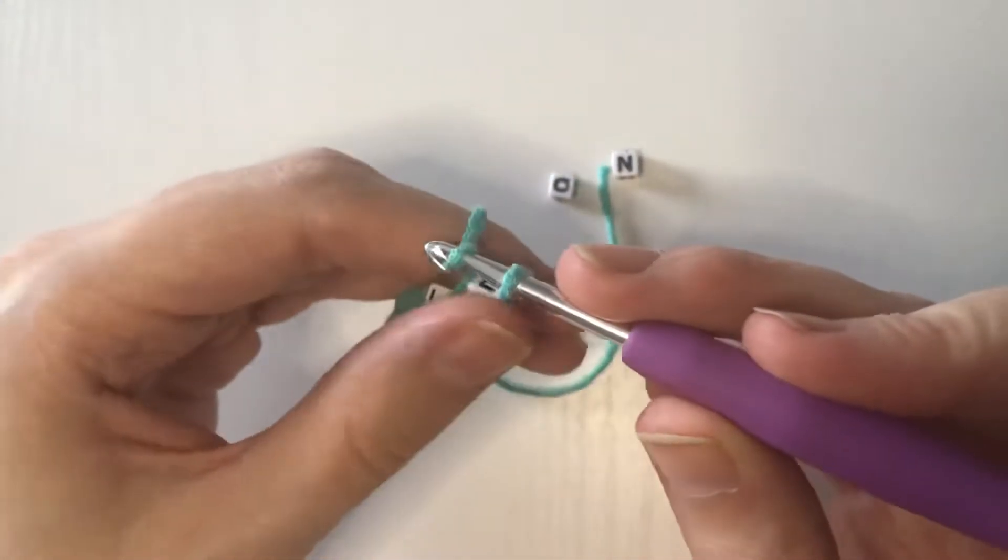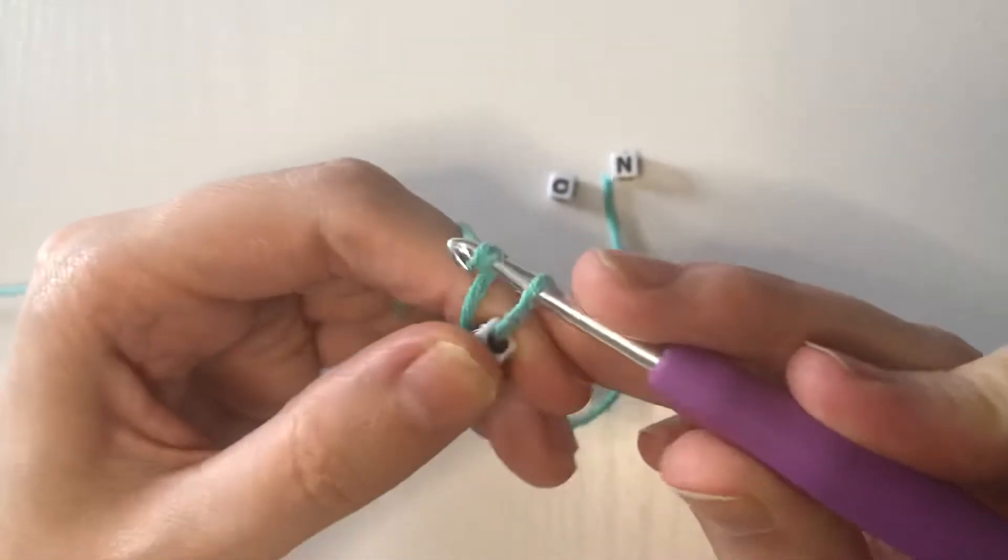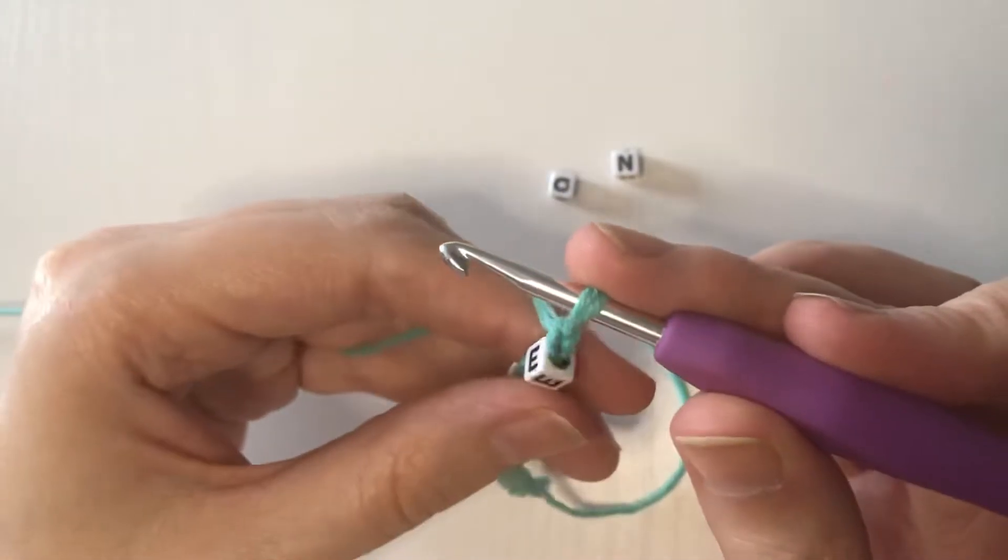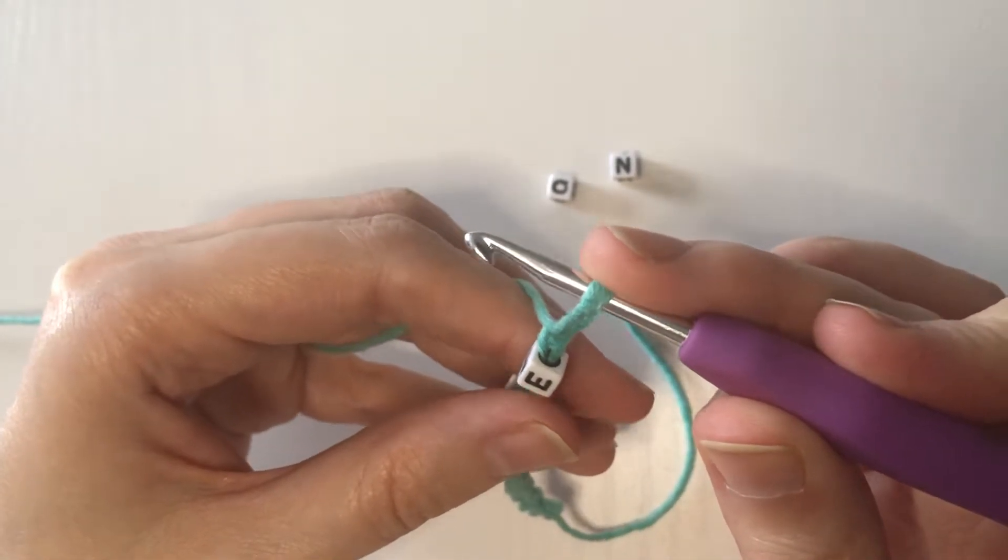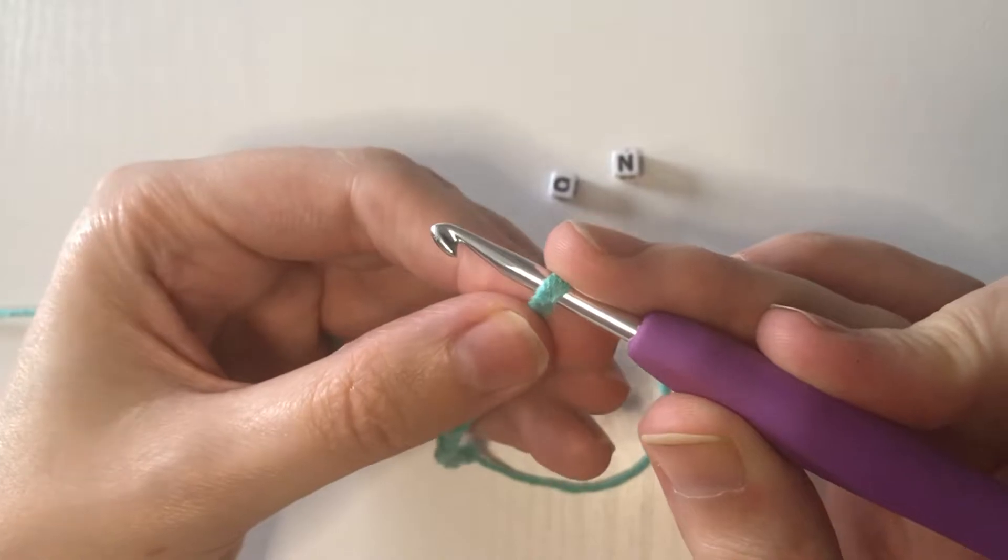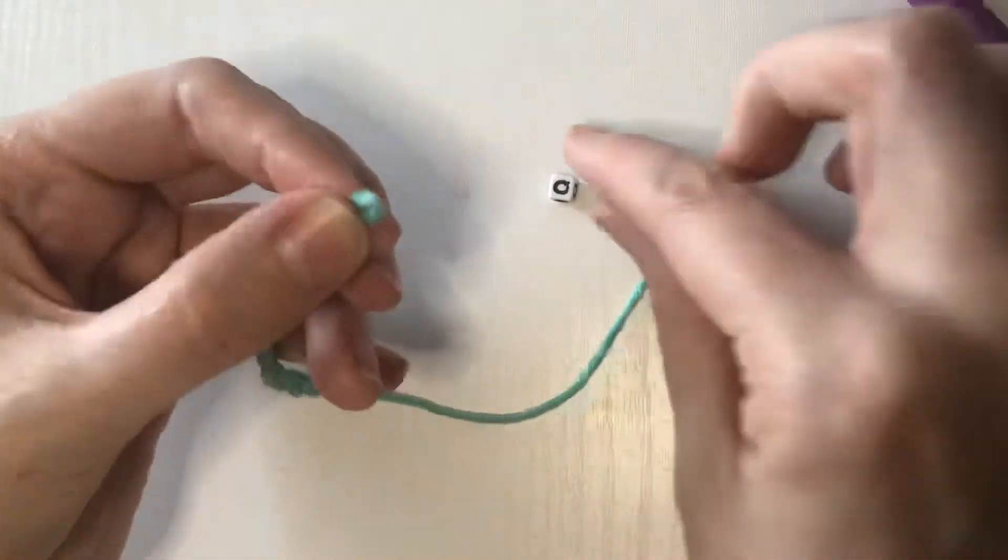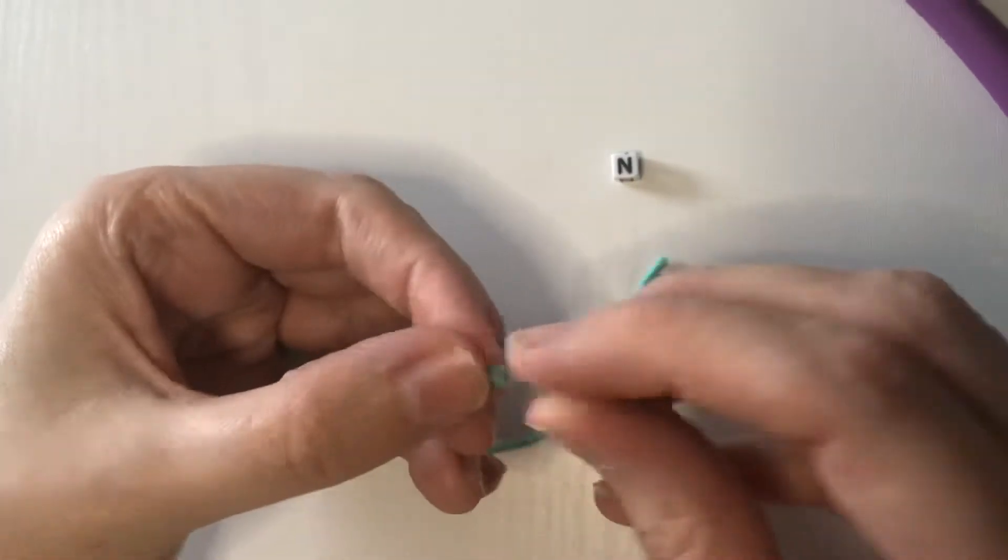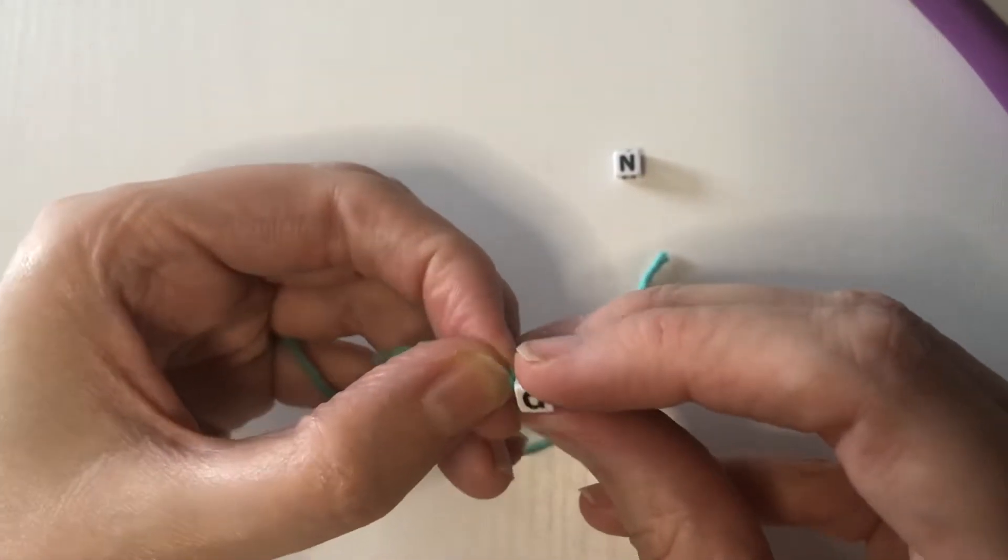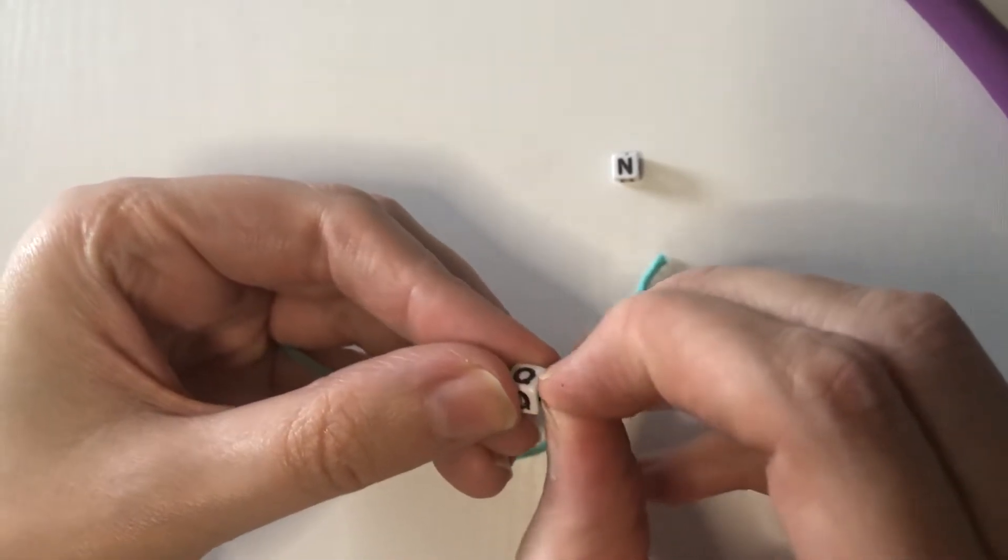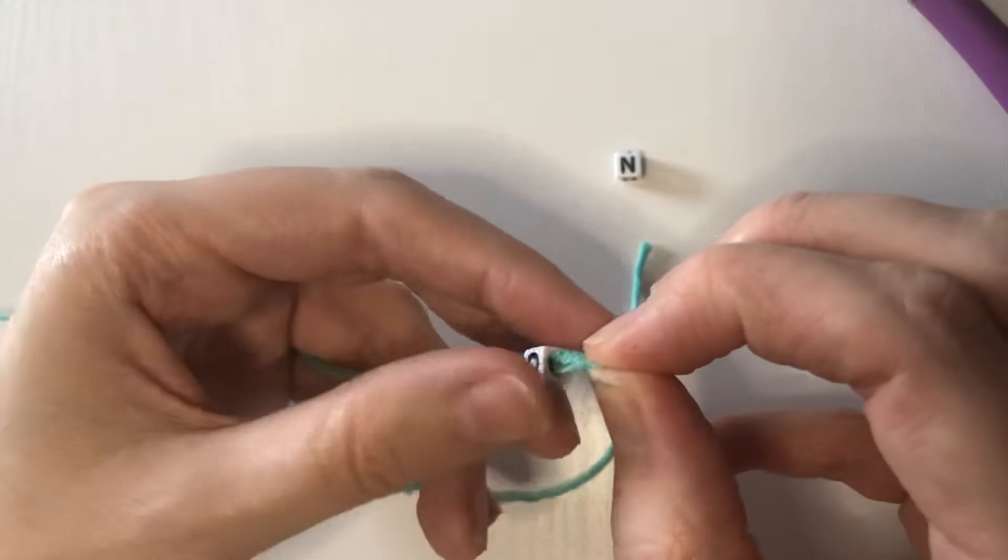Two more letters to go, here we go. Get a little bit longer, hold it nice and tight so you don't lose it, squeeze it, put the letter on. We ran out of O's so we're using a Q that kind of looks like an O, but I don't think it's gonna matter.